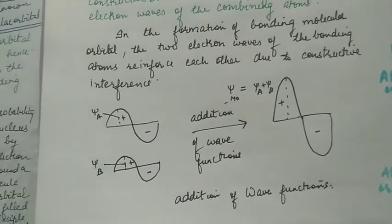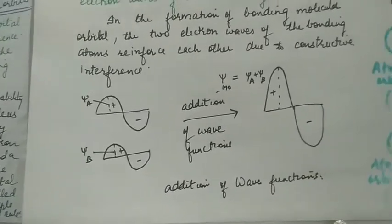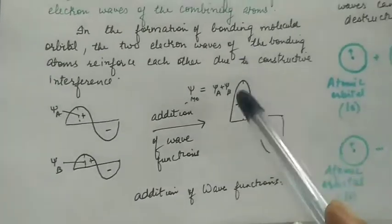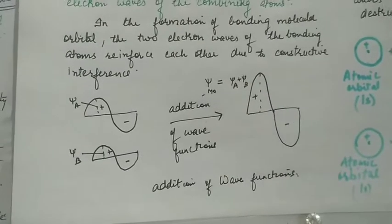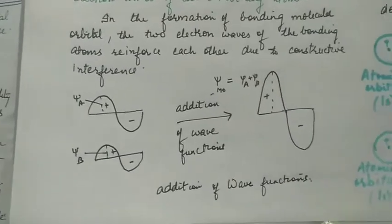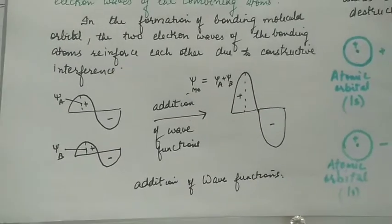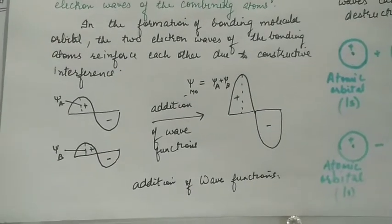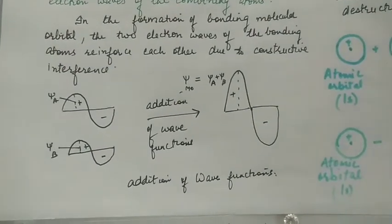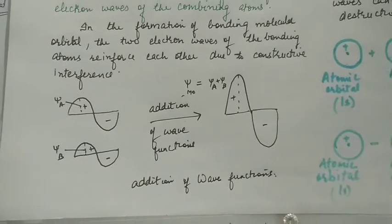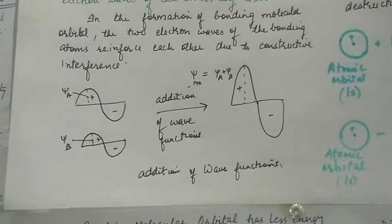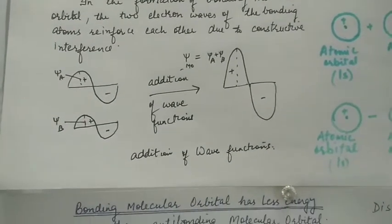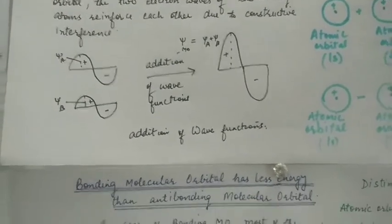In the formation of a bonding molecular orbital, the two electron waves of the bonding atoms reinforce each other due to constructive interference.